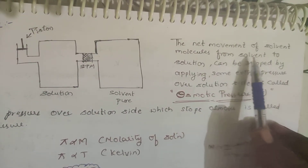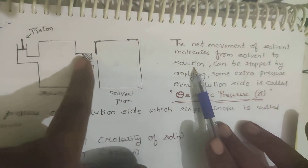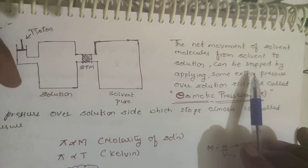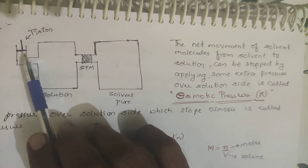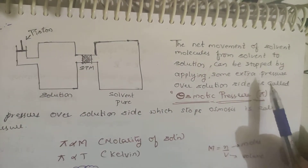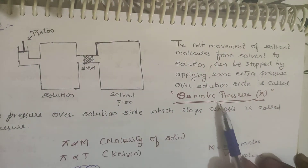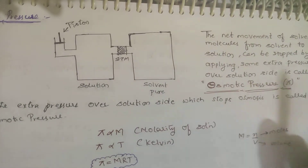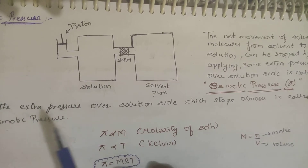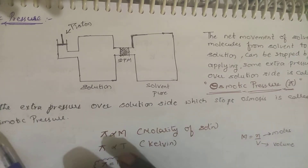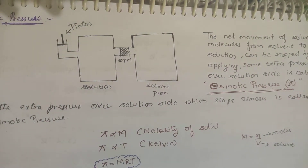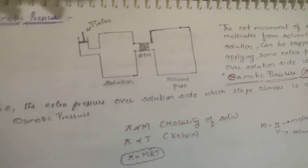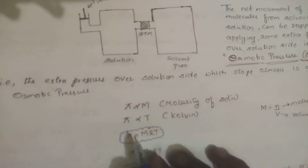The net movement of solvent molecules from solvent to solution can be stopped by applying extra pressure on the piston. The extra pressure applied over the solution side which stops the osmosis is called osmotic pressure. So as osmosis occurs, the level rises; to stop that rise you place weight, reducing the entrance of water into the solution. This is called osmotic pressure.